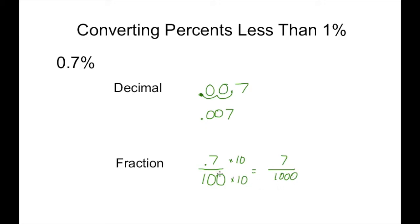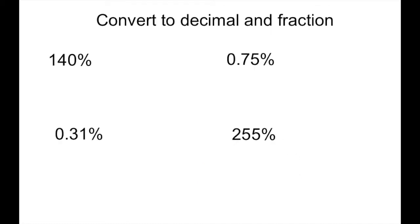Then I simplify that if I can. It doesn't look like I can, so 7 over 1,000 is going to be the fraction. Here are some examples for you to do on your own. Pause the video and convert these four — convert them to a fraction and a decimal — then hit play and we'll see how you did.